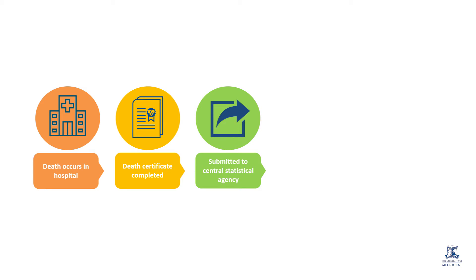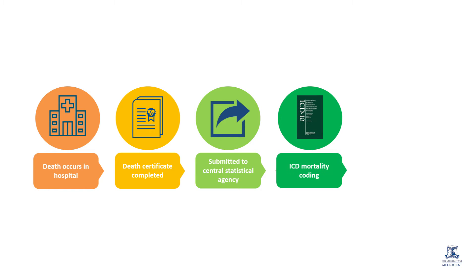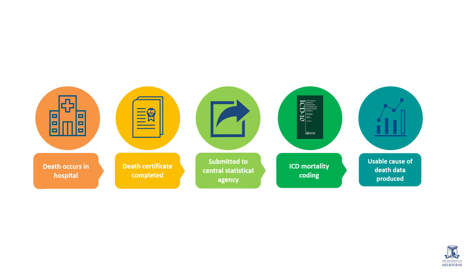In the process of coding, a single underlying cause is assigned for each death. This cause is coded according to the standards set out in the World Health Organization's International Statistical Classification of Diseases and Related Health Problems, or ICD. As mortality coding is based on the details provided on the death certificate, when those details are inaccurate, the production of correct mortality data for public health interventions cannot be achieved. As a doctor, you have a vital role to play in this process.